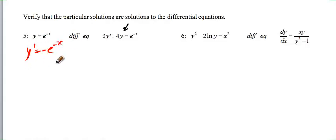Now, if this is truly a real solution to this differential equation over here, when I plug it in, everything should make sense. So 3 times y prime is negative e to the negative x plus 4 times y is e to the negative x. And that should equal e to the negative x.